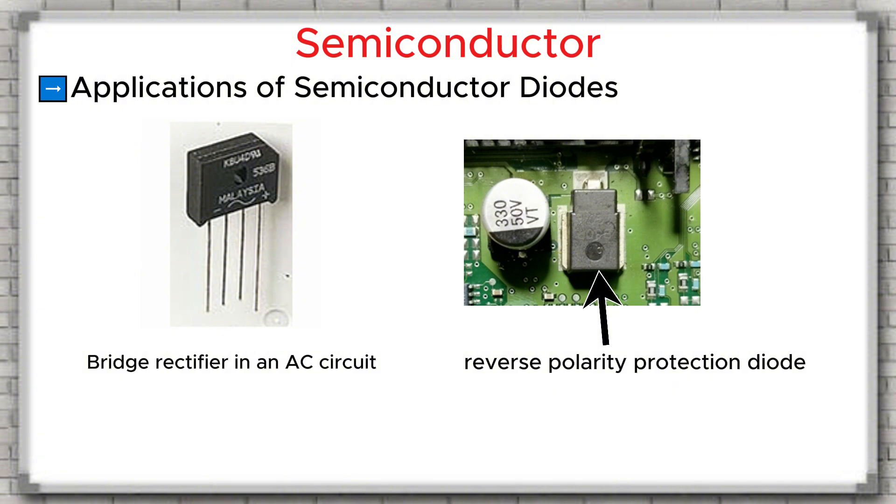Applications of semiconductor diodes. Because a diode conducts current only in one direction, it is widely used in many electronic circuits. First, in rectifier circuits, a diode converts alternating current, or AC, into direct current, or DC. Second, in detector circuits, a diode can separate the signal from a radio wave. Third, in clamping or biasing circuits, a diode helps set the proper operating point for a transistor.